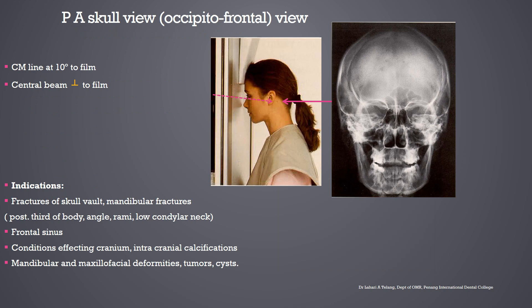In the posterior anterior view, the patient is facing the film or sensor and the canthomeatal line is at 10 degrees to the film or sensor. The x-rays are coming from behind the skull, with the central beam perpendicular to the film or sensor. Indications include fractures of the skull vault, mandibular fractures of the posterior third of the body, angle, rami, or lower condylar neck; conditions affecting the cranium and intracranial calcifications; mandibular and maxillofacial deformities; and tumours and cysts. The posterior part of the skull superimposes over the anterior part, and all these structures can be visualized in the PA view.